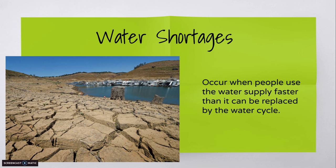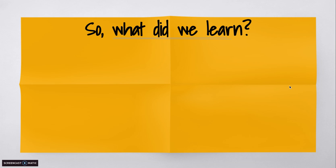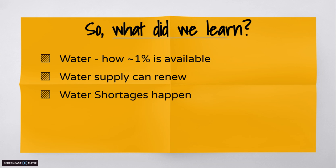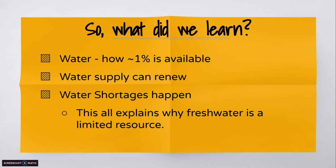So this is what makes fresh water a limited resource. Water in and of itself? No. But fresh water — water that can be used to hydrate us as humans, water our pets, the plants, the crops — we need fresh water to do that, and less than 1% of the water on Earth can actually be used for that. We learned how only less than 1% is available for us, how the water supply can renew through the water cycle, how water shortages happen typically in places of drought where there's not enough rainfall. This all explains why fresh water is a limited resource.